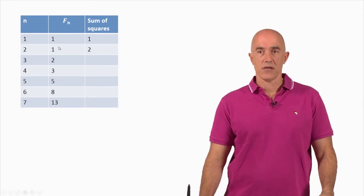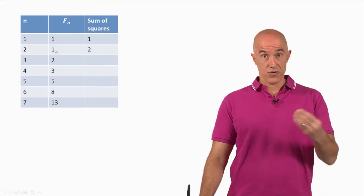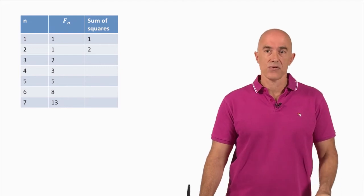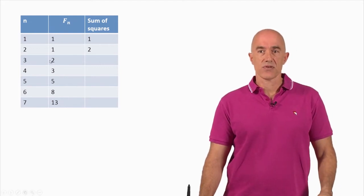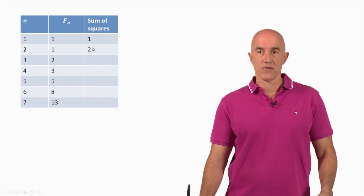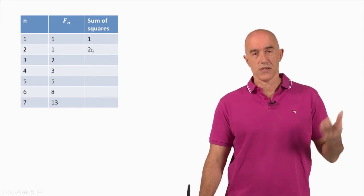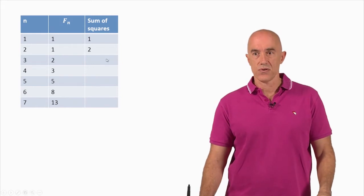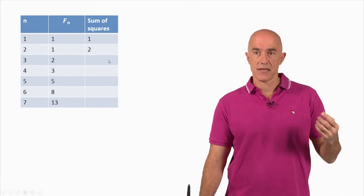The second entry, we add 1 squared to 1 squared, so we get 2. The next entry, we have to square 2 here to get 4, and we add that to 2, which is the sum of the squares of the first 2. So we get 6.